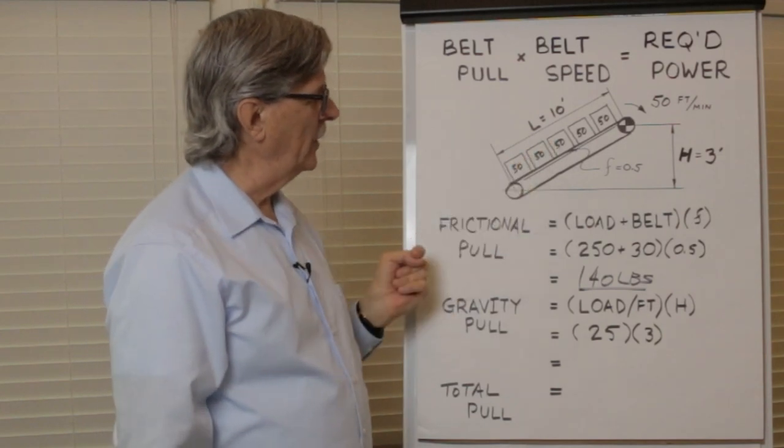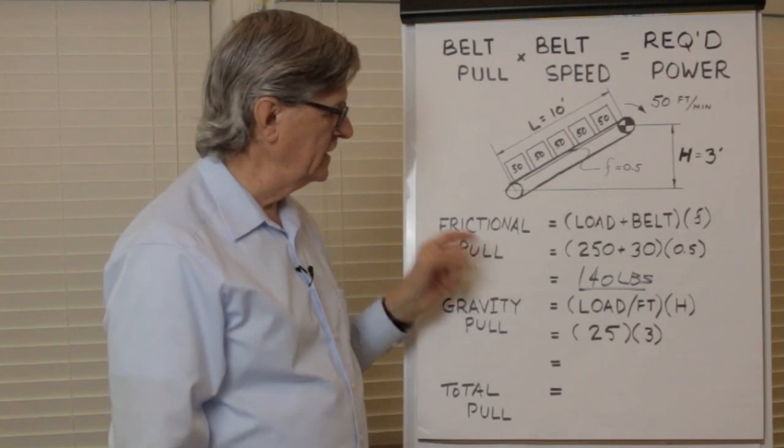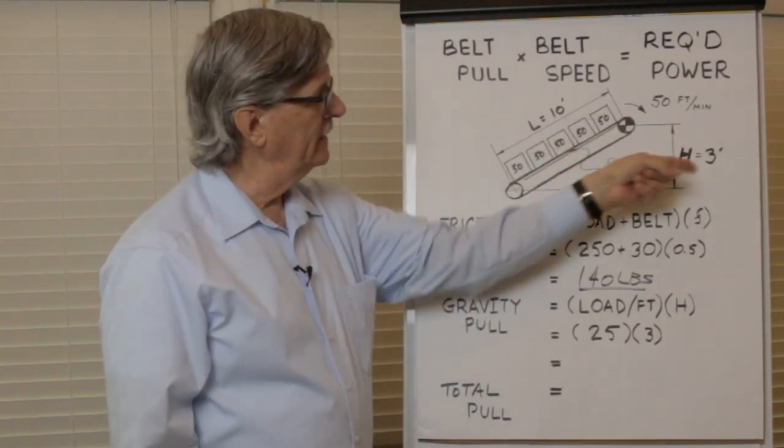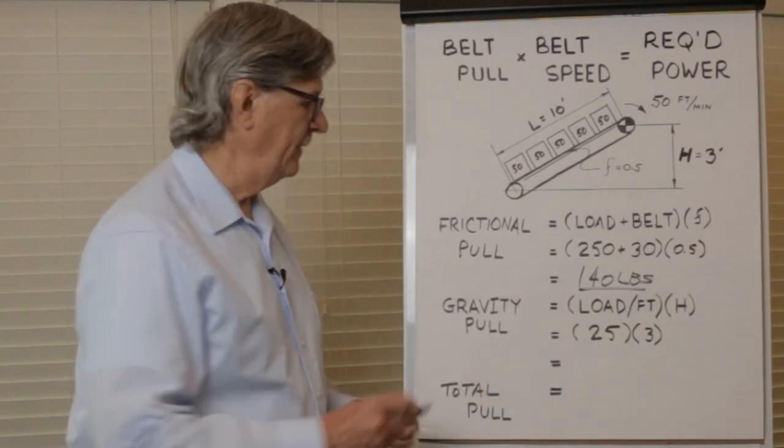We have 250 pounds total over a 10 foot length. 250 divided by 10 is 25 pounds per foot. We multiply that against the change in elevation of three feet. Three times 25 is 75.